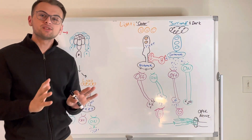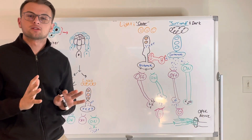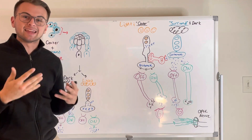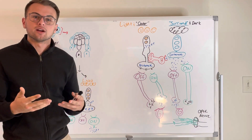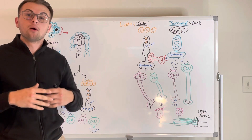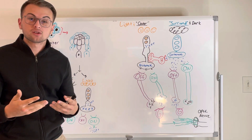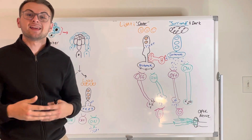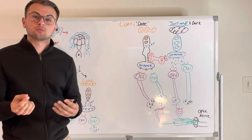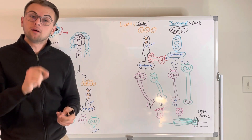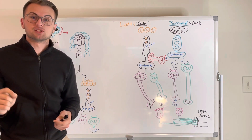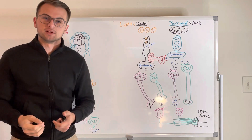In our previous videos, we talked about how there were other cells that reside in the inner nuclear layer of the retina. These cells are called bipolar cells, horizontal cells, and amacrine cells. To remember them, use the mnemonic BHA.